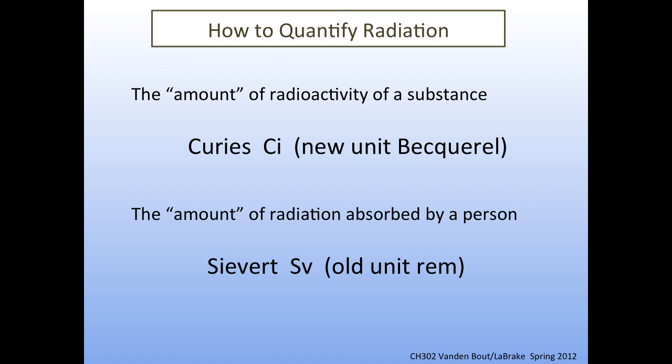How to quantify amounts of radiation. There are two key methods to quantifying amounts of radioactivity. One has to do with the amount of radiation a given substance is giving off, and the other is the amount of radiation that's been absorbed over time by a particular person.